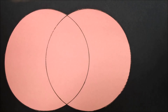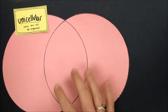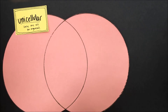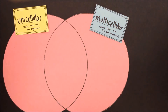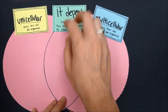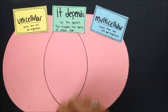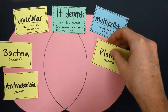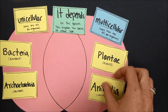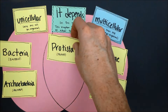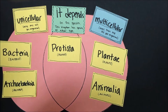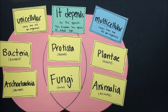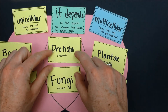Now let's examine number of cells. Some organisms are unicellular, meaning each organism is made out of just one cell. Others are multicellular, meaning they are made out of more than one cell. Bacteria and archaea only exist as unicellular organisms. Plants and animals only exist as multicellular organisms. But some organisms in the kingdom protista and some in the kingdom fungi can be unicellular, and some can be multicellular — it depends on the species.